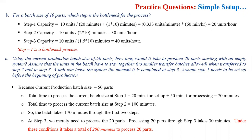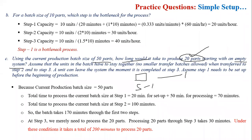Question number three: if we have a batch size of 50, how much time will it take to make 20 parts through the system, starting from an empty system? We need to calculate the time for the first unit, because right now we are producing in batches, not single units. The process goes through step number one, then step number two, then step number three. At step number one we produce 50 units; at step number two we produce 50 units.